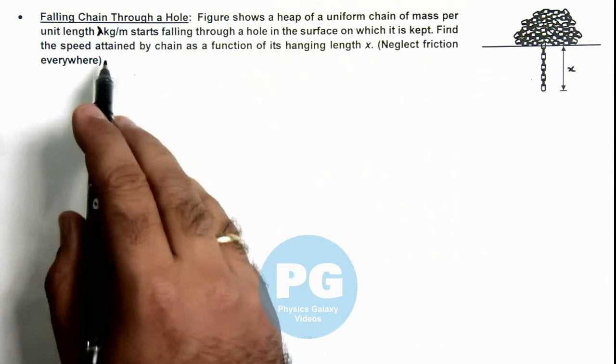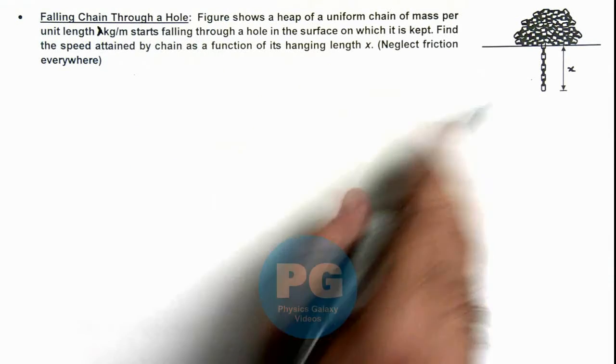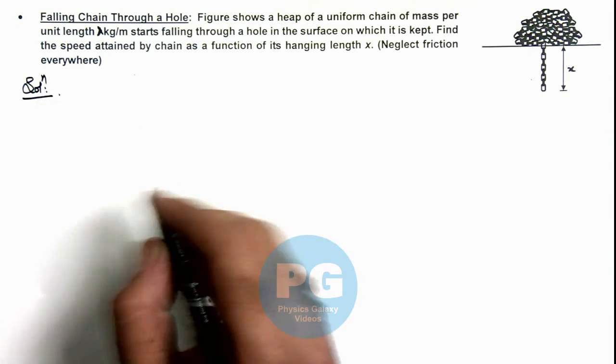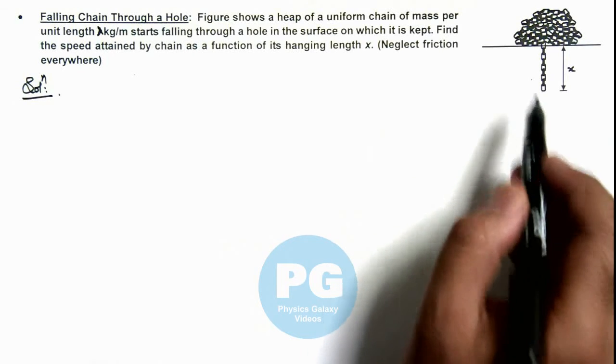We are required to find the speed attained by the chain as a function of its hanging length x. Now in this situation, if x length of chain is hanging and it attains a speed v, then we can write...